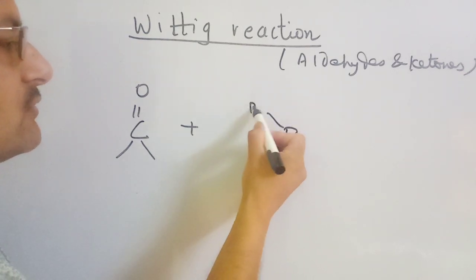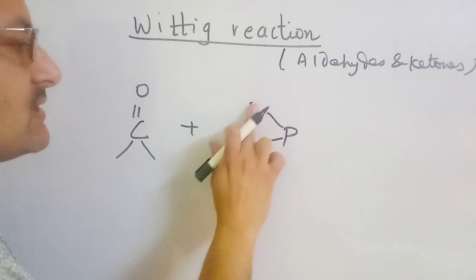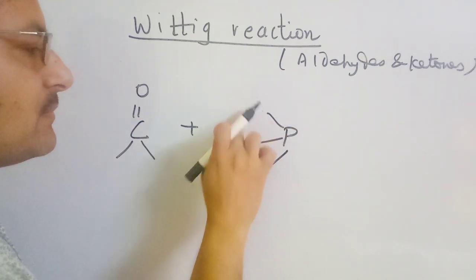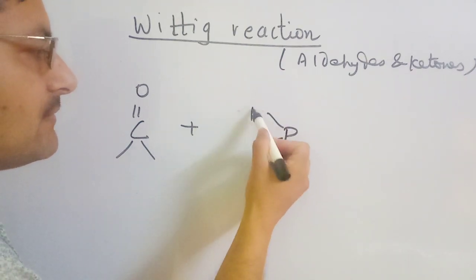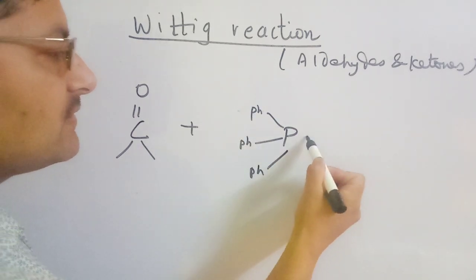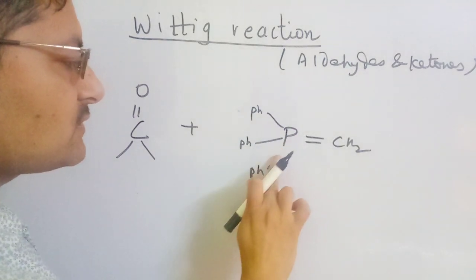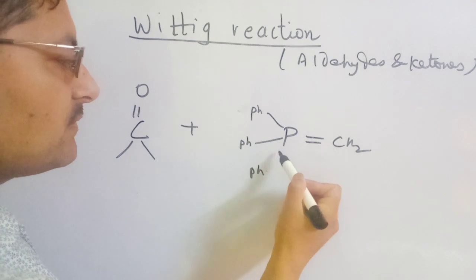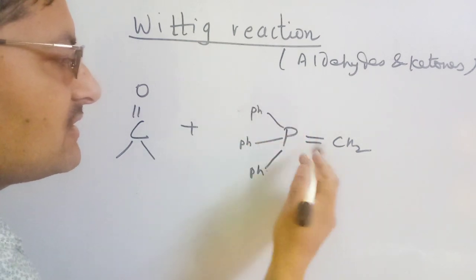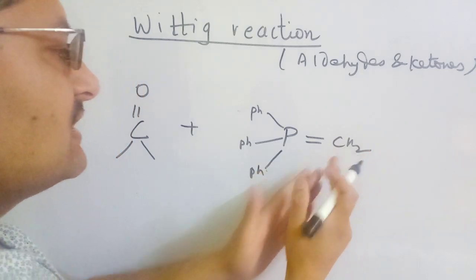The phosphorus ylide is phosphorus triple-bonded, attached to an alkyl group or phenyl group, with a double bond to CH2. This is the phosphorus organic or alkyl part, which has a double bond to CH2.